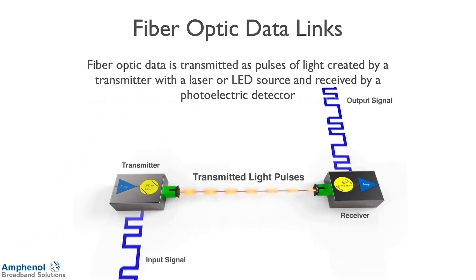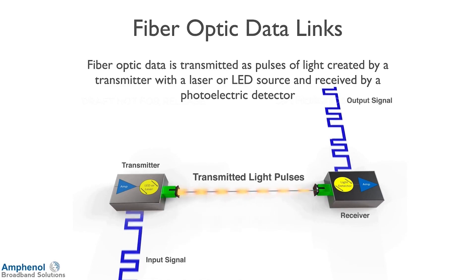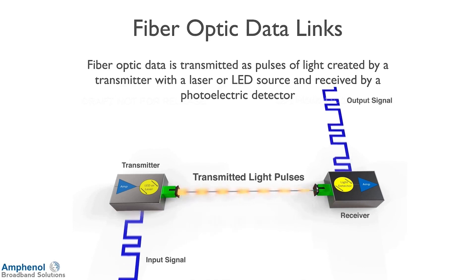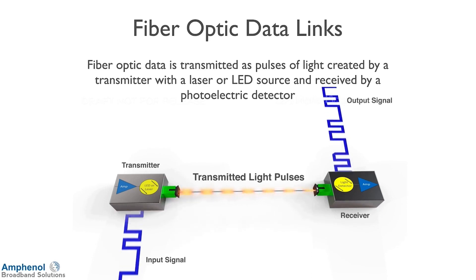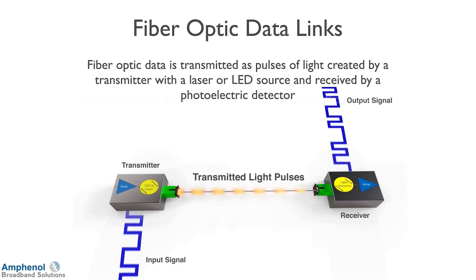Fiber optic data is transmitted as pulses of light created by the transmitter with a laser or LED source and received by a photo detector. Here I'm showing an RF signal going into the transmitter. The transmitter takes electrical signal and converts it to light pulses — this could be either an LED or a laser. It's connected to a fiber optic cable, which transmits the light down the fiber to the optical receiver, which has a detector that converts the light back into RF energy.